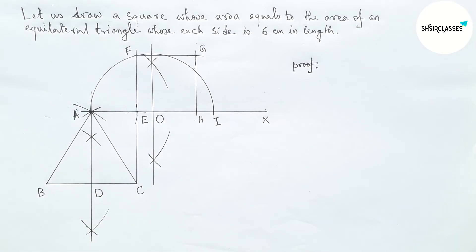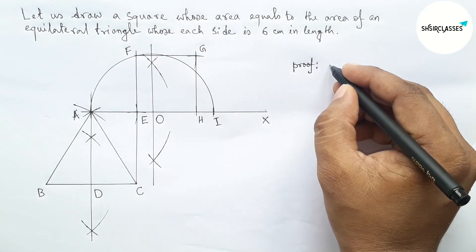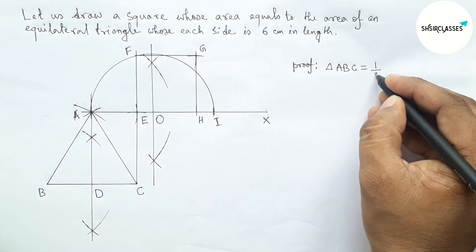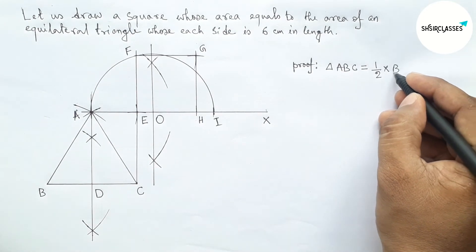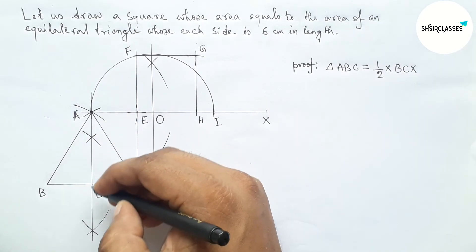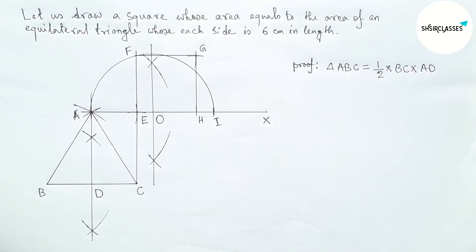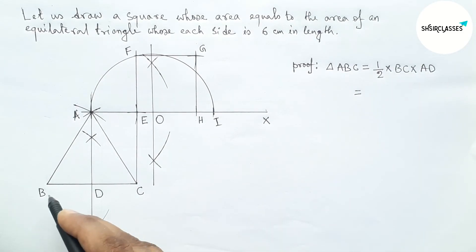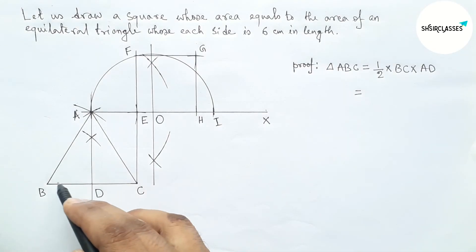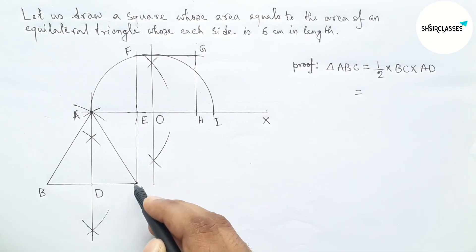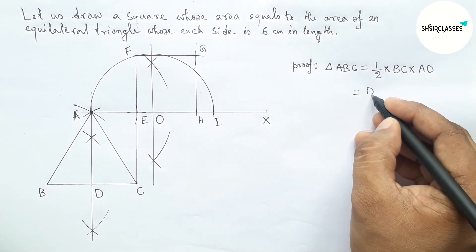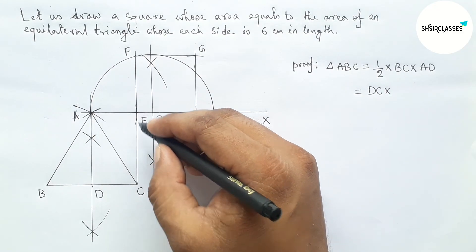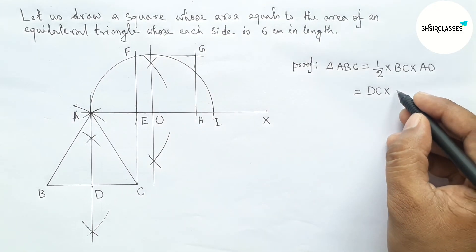Now we have to prove this. Writing down the area of the triangle — this is an equilateral triangle, and the area of a triangle equals half of base into height. Here base equals BC and height equals AD. So this equals half of BC, and half of BC equals DC. So we have DC into AD, which equals CE.